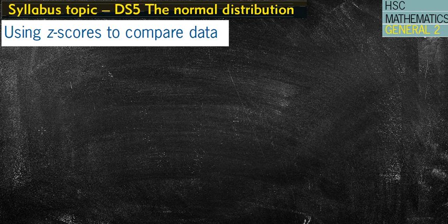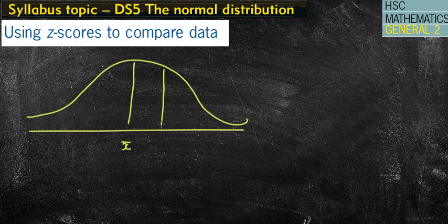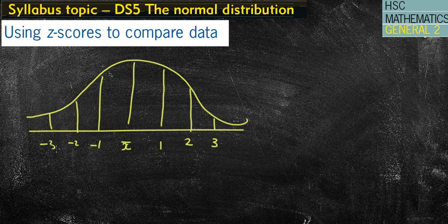I'm just going to do a quick recap of our z-scores. So remember last lesson we looked at our normal distribution table, where we had the mean in the middle, and then we had our standard deviations, or a z-score of positive 1, which is one standard deviation above the mean, two standard deviations above the mean, and three standard deviations above the mean, then one below, two below, and three below. And they were our actual z-scores.